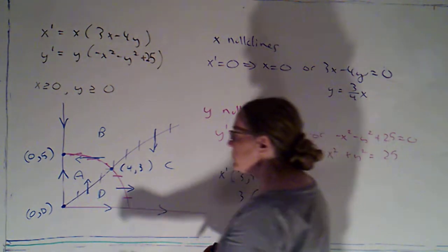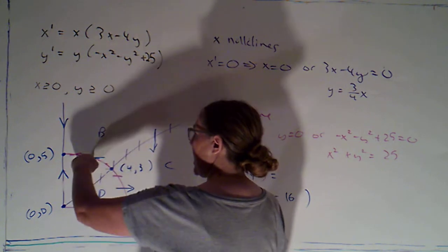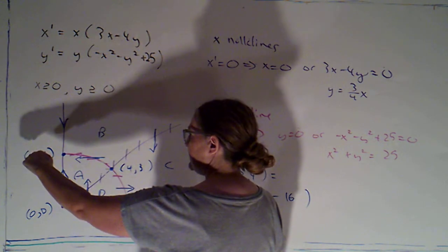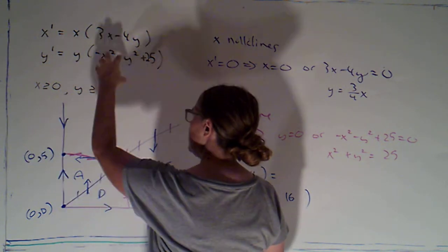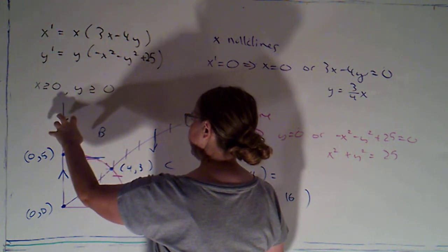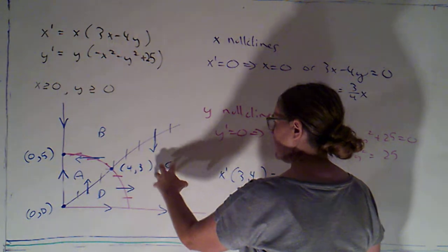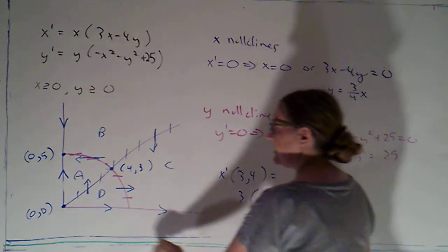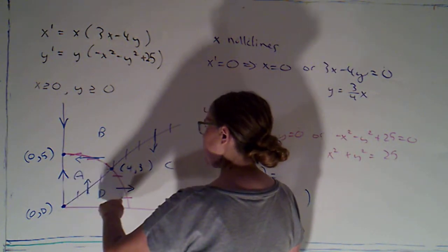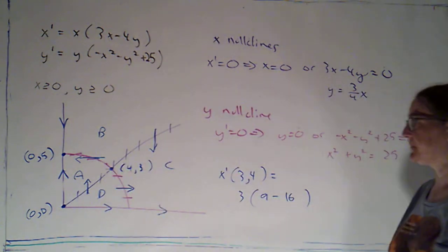Okay. So, basically if we're in region A, we're going up and left. If we're in region B, we're going down and left. If we're in region C, we're going down and right. And if we're in region D, we're going right and up.